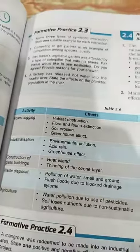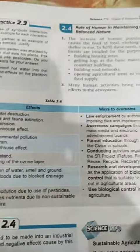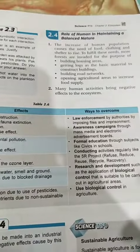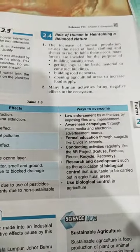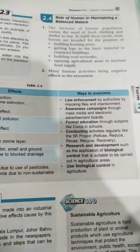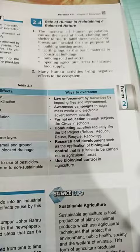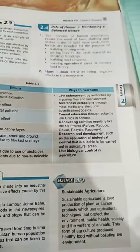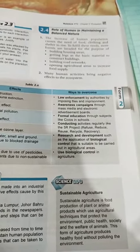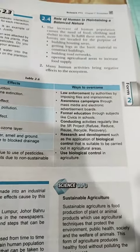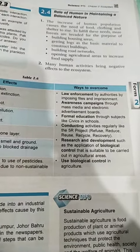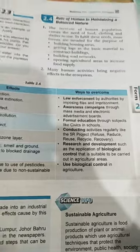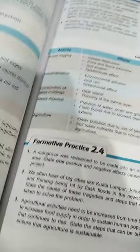To summarise the ways to overcome: Law Enforcement, Awareness Campaigns, Formal Education, Conducting Research and Development, and Use of Biological Control. Law Enforcement is very important for science.